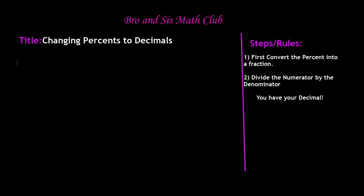Our first example is 56%. Step number one says to convert the percent into a fraction. We know that a percent is out of 100, so 56% tells us that it is 56 out of 100. Step number one is done. Step number two is divide the numerator by the denominator — the top number divided by the bottom number.